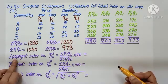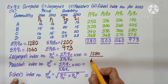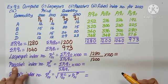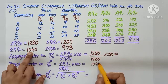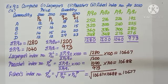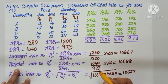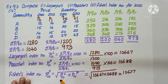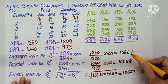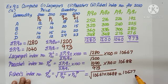Substitute in Laspeyre's index number: sigma P1Q0 by sigma P0Q0 into 100. Paasche's sigma P1Q1, 1014, sigma P0Q1, 973 into 100. Laspeyre's index number is 106.67, Paasche's 106.88, and Fisher's geometric mean of Laspeyre and Paasche. What do you mean by geometric mean? Square root of the product of the two index numbers. Square root of 106.67 into 106.88, that reduces to 106.77. And that is the completion of the answer.